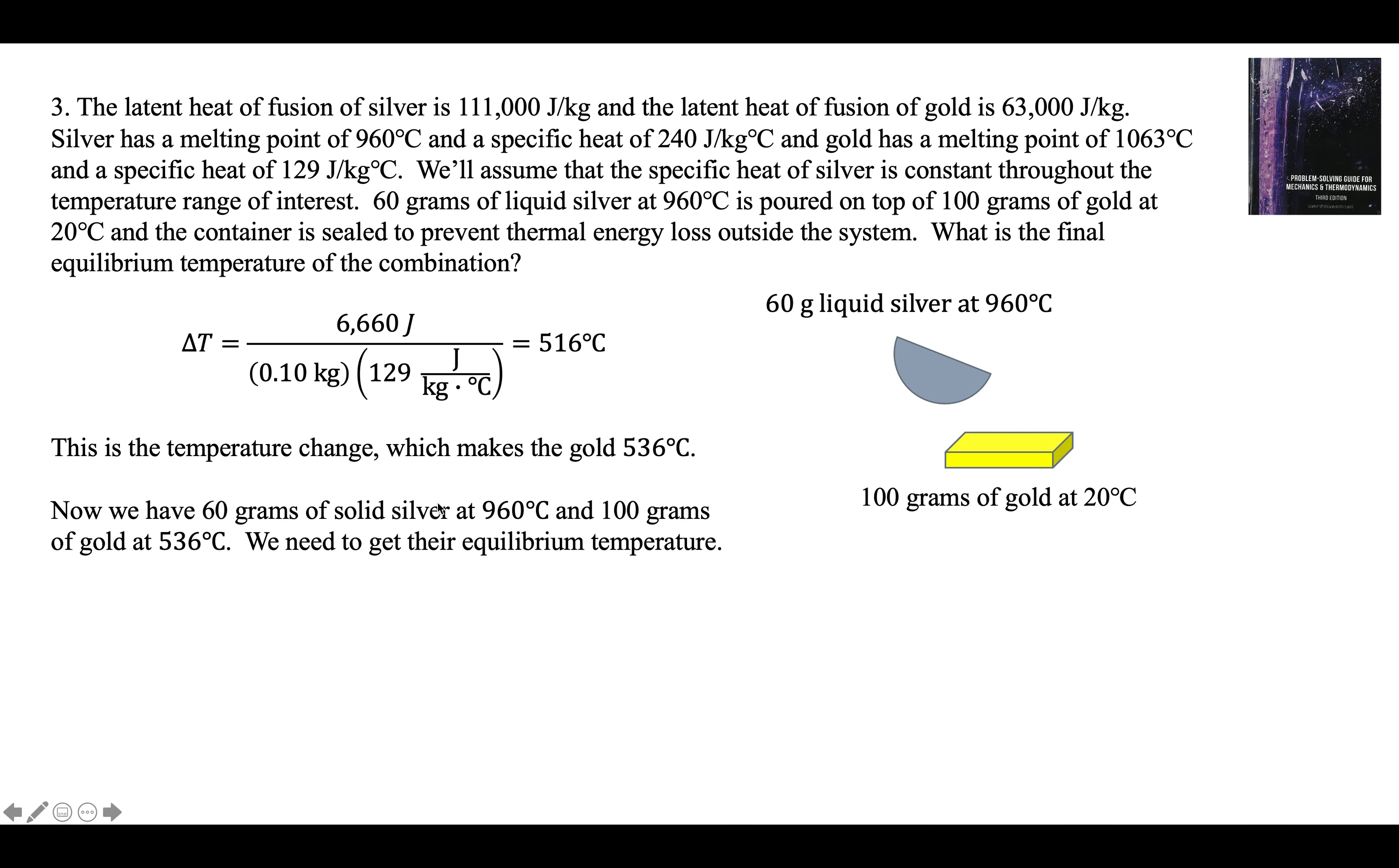So we have 60 grams of solid silver at 960. We didn't change the temperature yet. We have 100 grams of gold at 536 and we're going to let them fight it out and see where they get to. They're going to come to some equilibrium temperature. It's between 536 and 960. We have to figure out what it is.